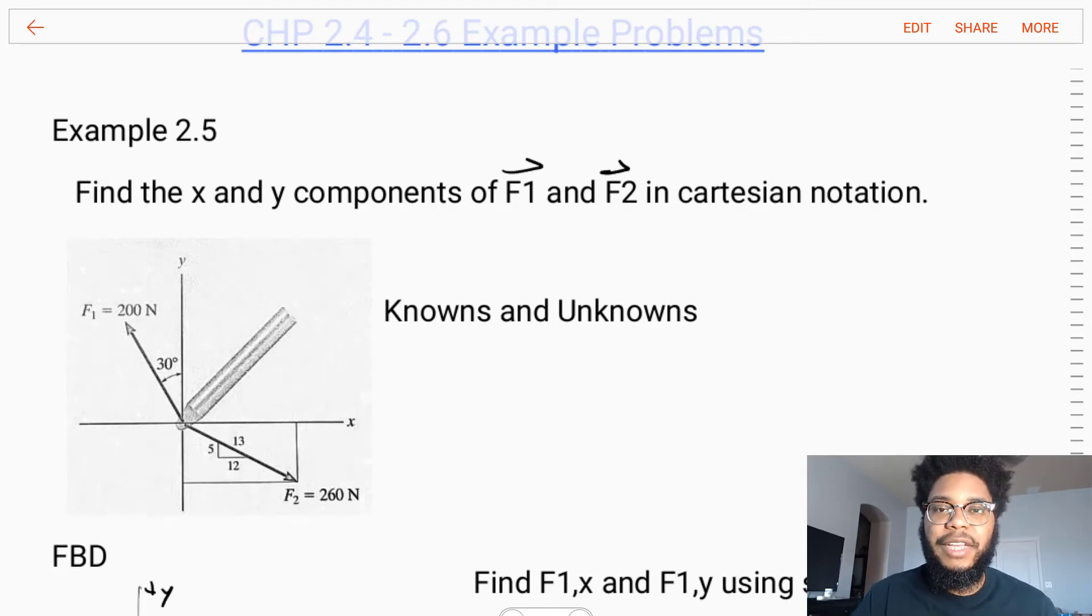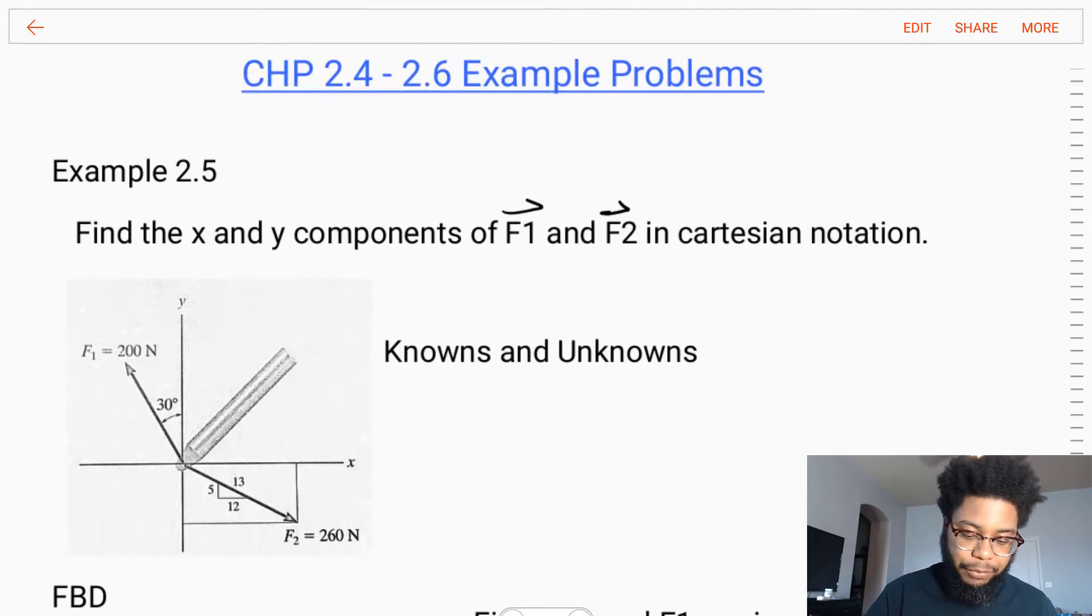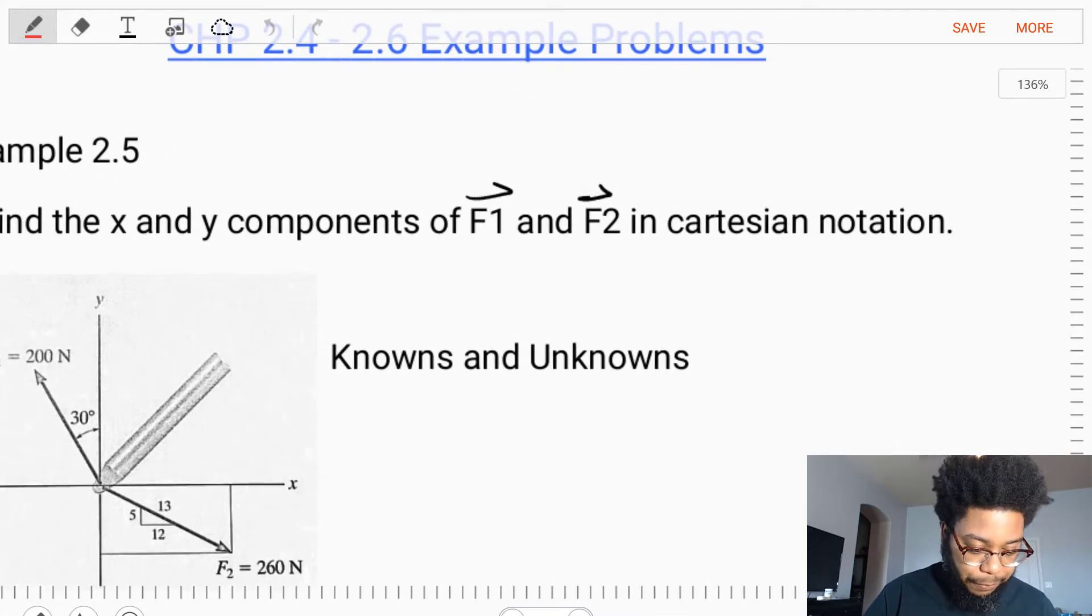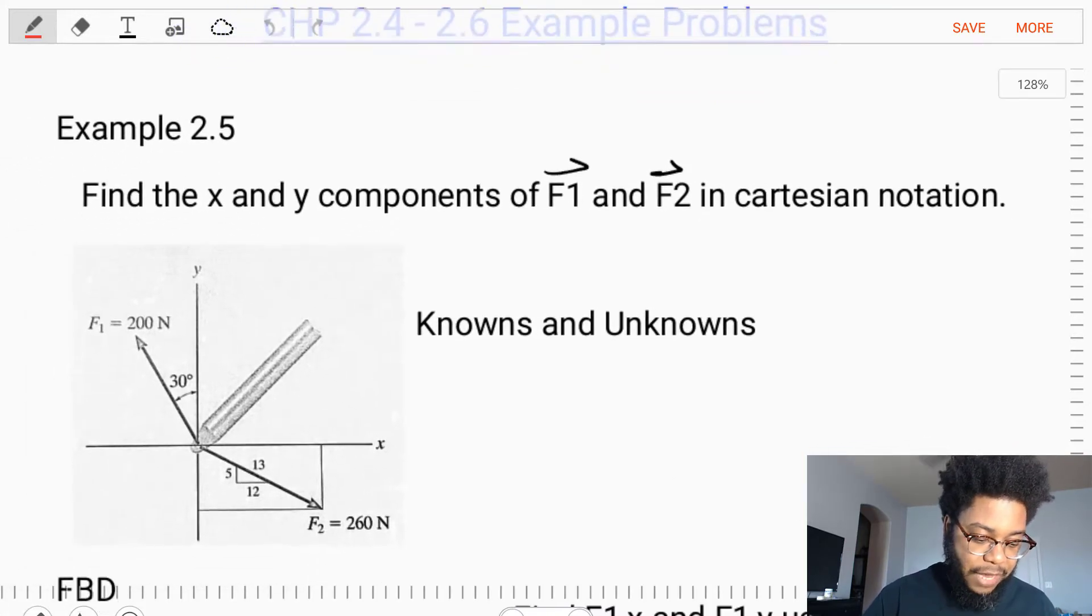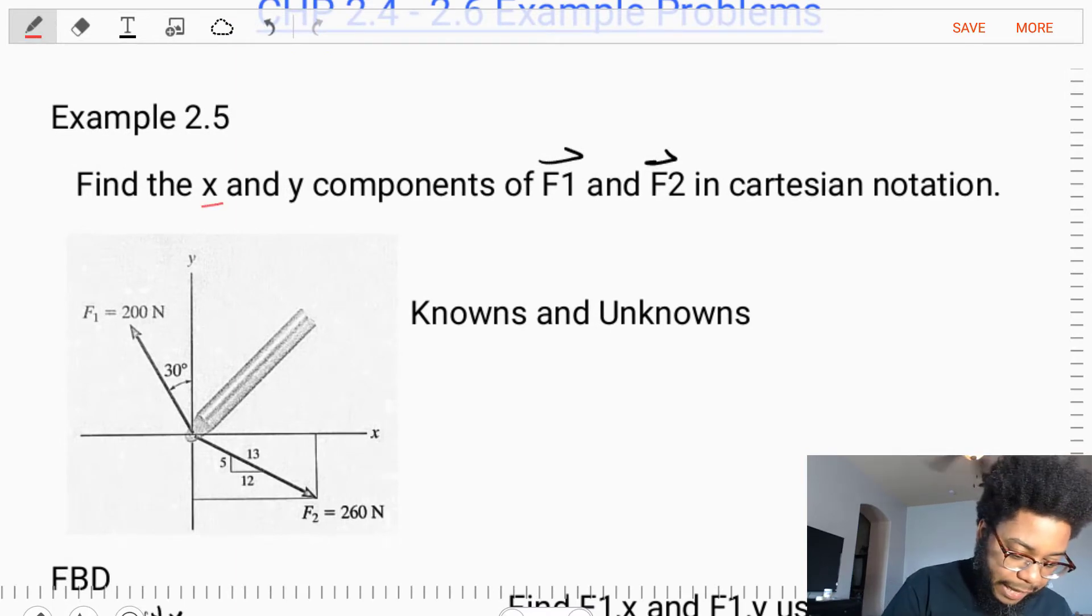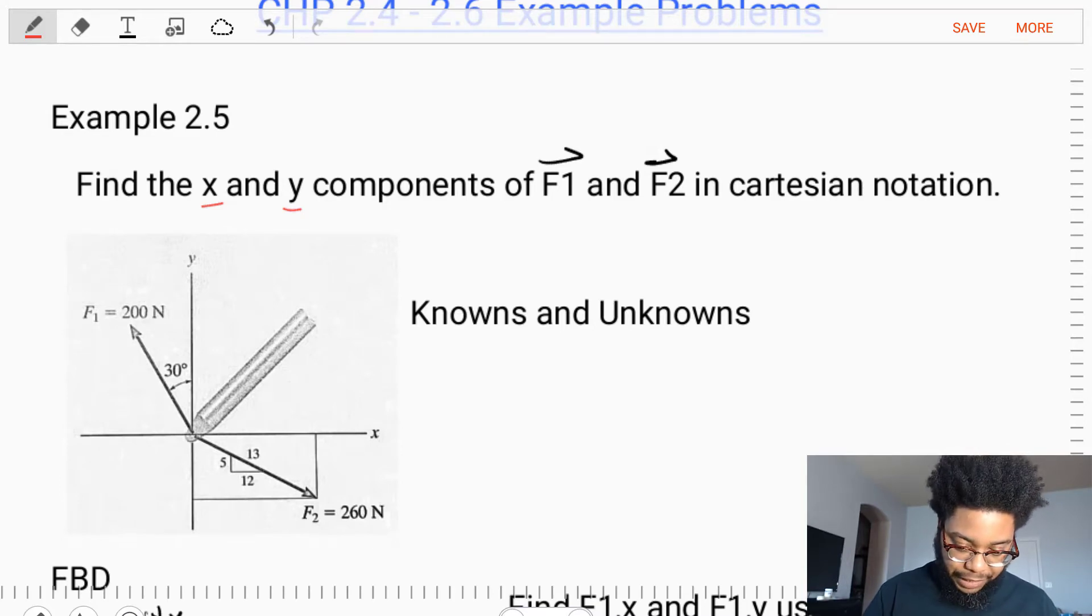Hello students, welcome to Statics. I'm Dr. Stewart and today we're going to do an example from chapter 2.4 to 2.6. This is a fairly straightforward example where we're asked to find the x and y components of vectors F1 and F2 in Cartesian notation. So, we need to find the x and y components of each of these vectors in Cartesian notation.